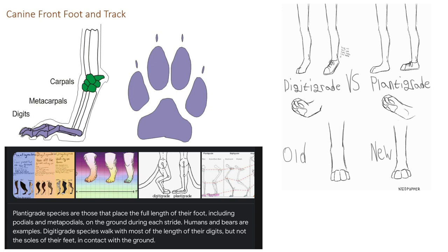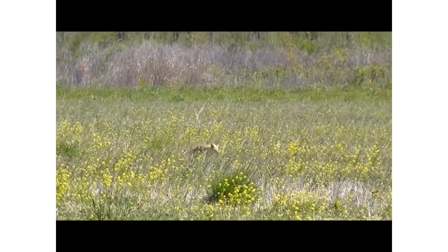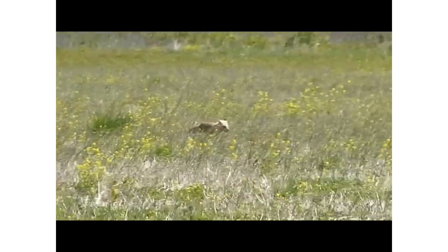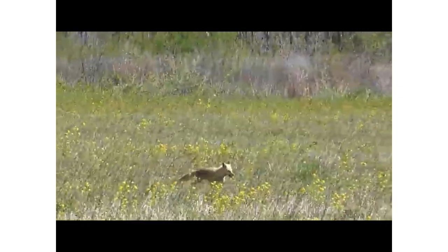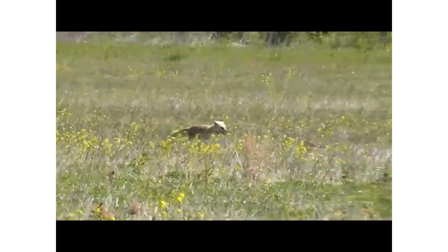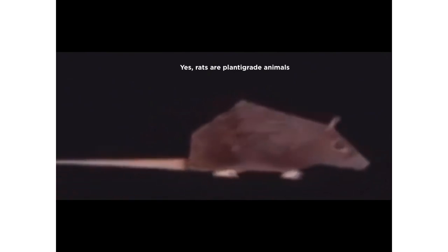Cats have digitigrade legs, which means they walk on what is considered their toes or paws. Humans have plantigrade legs, which means they walk on the soles and toes of their feet. Digitigrade animals are typically able to move much faster and more quietly than plantigrade animals, because of the extra leverage in the ankles, which provides an extra spring in each step — so each step feels lightweight and treads lightly. Plantigrade animals don't have that extra boost, so they have to lift each step with more weight.